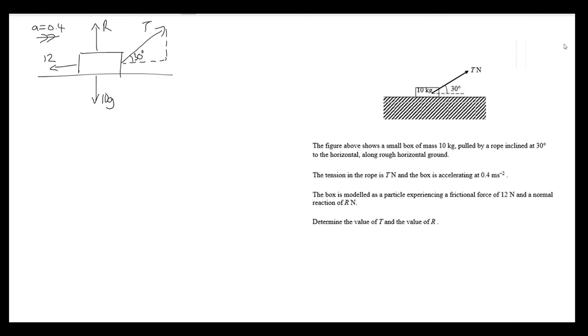Now we're told that the box is modeled as a particle experiencing a frictional force of 12 newtons, so those 12 newtons should be going against the direction of motion, going off to the left. This is why it's important to state that arrow to indicate your initial positive direction of movement. The question also tells us there's a reaction force, but we anticipated that earlier.